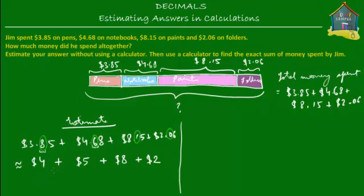Now it's very simple to add these whole numbers. 4 plus 5 is 9, then 9 plus 8 is 17, and 17 plus 2 is 19. So the total amount of money that Jim spent at the stationery shop is about $19.